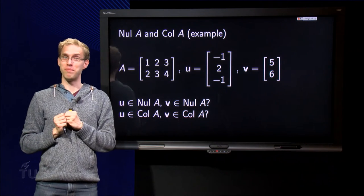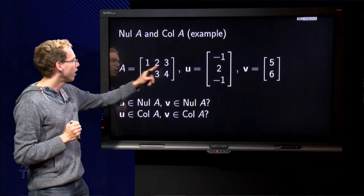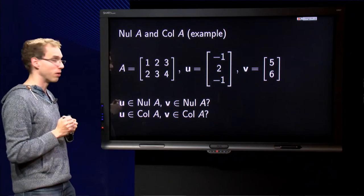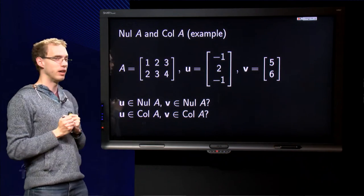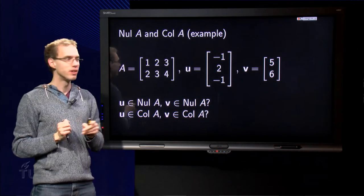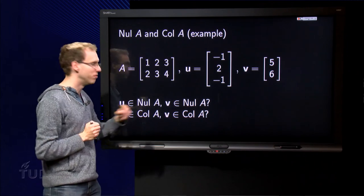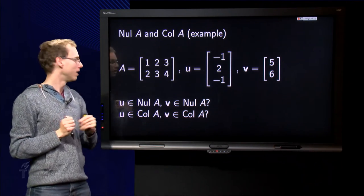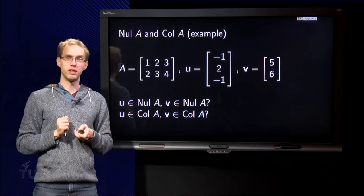So here we have a matrix A, a vector u and a vector v. So we can wonder: is u in Nul A or is v in Nul A or both? And is u in Col A and is v in Col A or both? Let us look at the null space first.